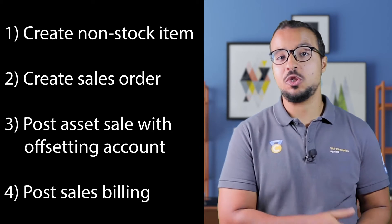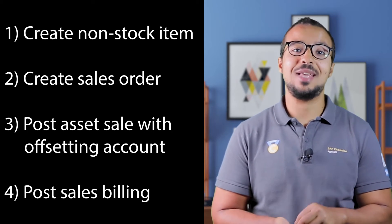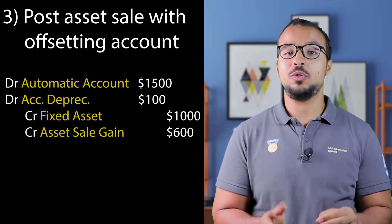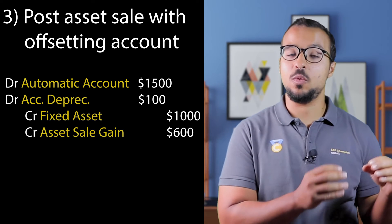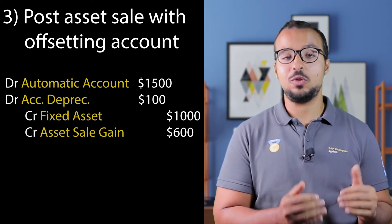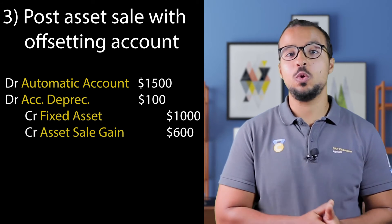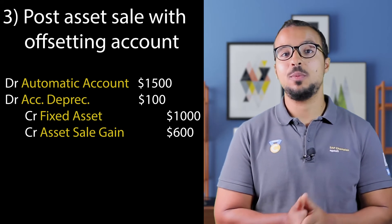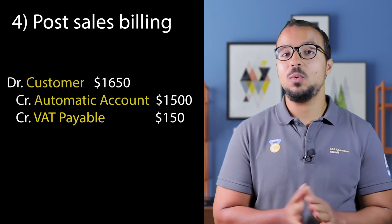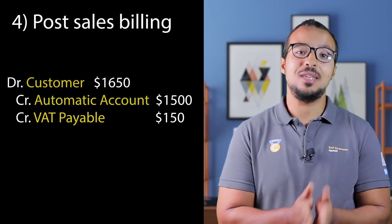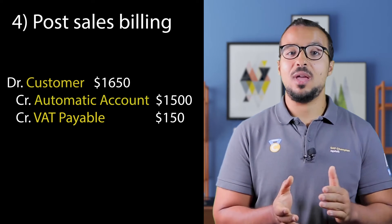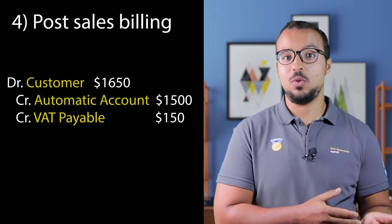The third step is to switch to the fixed asset module and post a fixed asset sale with automatic offsetting account. Here we have our first accounting entry: a debit to the automatic offsetting account with the value of the fixed asset sale, a debit to the accumulated depreciation account of the fixed asset, a credit to the fixed asset acquisition cost, and the difference goes to a gain or loss account. Then we switch back to the sales and distribution module and post a billing document with reference to the sales order. This gives us our second accounting entry: a debit to the customer account for the value of the fixed asset sale plus any applicable taxes, a credit to the tax account, and a credit to the revenue account.